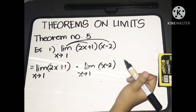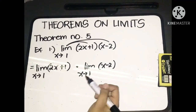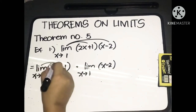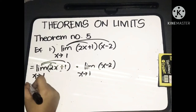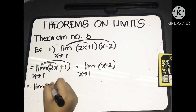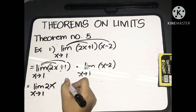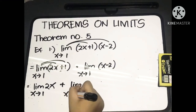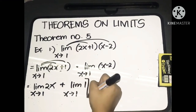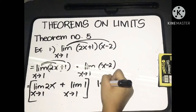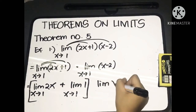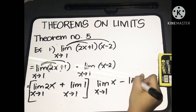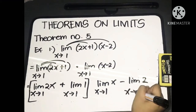Applying the previous theorem on the limit of a sum, we distribute the limit across addition: the limit of 2x as x approaches 1, plus the limit of 1 as x approaches 1, multiplied by the limit of the difference — the limit of x as x approaches 1, minus the limit of 2 as x approaches 1.